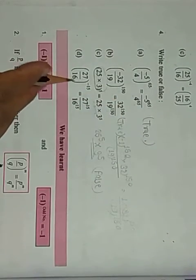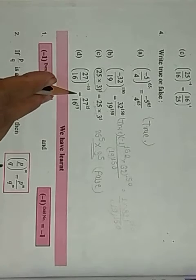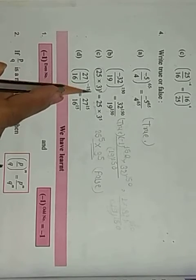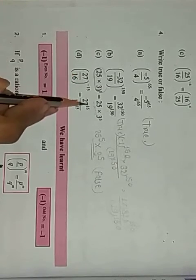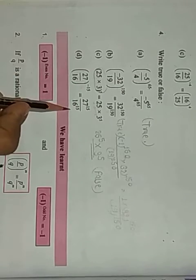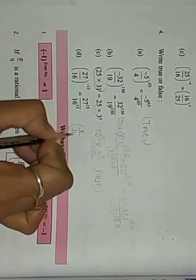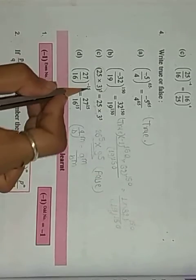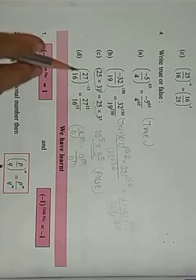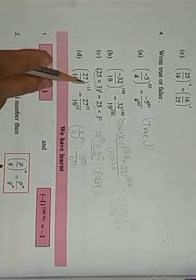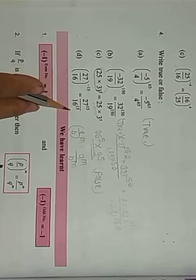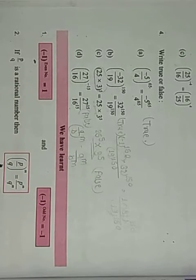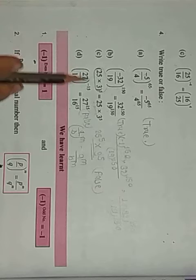Then question D: (27/16)^(−15) equals 27^15 / 16^15. When we open the bracket, both 27 and 16 get the power minus 15. By the rule (a/b)^m = a^m / b^m, so 27^(−15) / 16^(−15). But here positive 15 is written instead of minus 15, so this statement is false.